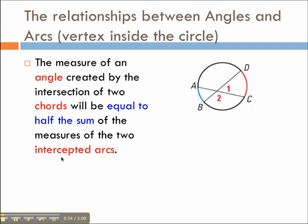will be equal to half the sum of the measure of the two intercepted arcs. So suppose we're looking at angle 1 here. It's going to be half the sum of its intercepted arcs. That would be arc AB plus arc DC. Add those together, take half of that, we find angle 1.